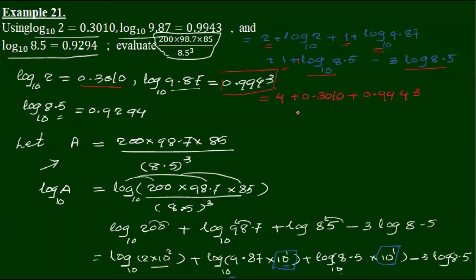Minus 2, minus 2 log 8.5 base 10. Now log 8.5 base 10 is 0.9294.